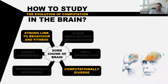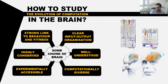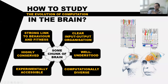The brain has a very strong link to behavior and fitness, and is computationally diverse, but the other four points are much less obviously addressable there. However, you can look at the subsystem that is the retina, and what I'm arguing is that all of these points are very nicely representable if you look at the retina rather than the brain as a whole. Whether you're a bird or a monkey or essentially any other vertebrate, the basic organization of the circuit is the same.